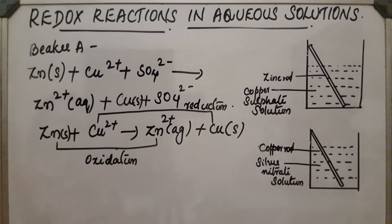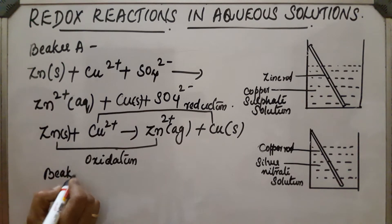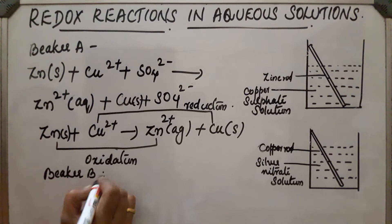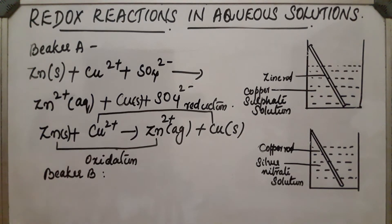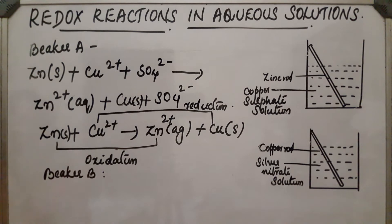Similarly, in beaker B, silver nitrate ionizes into silver ions and nitrate ions. Nitrate ions do not take part in the reaction. Silver gets deposited on the copper rod, and copper partially dissolves into the solution.